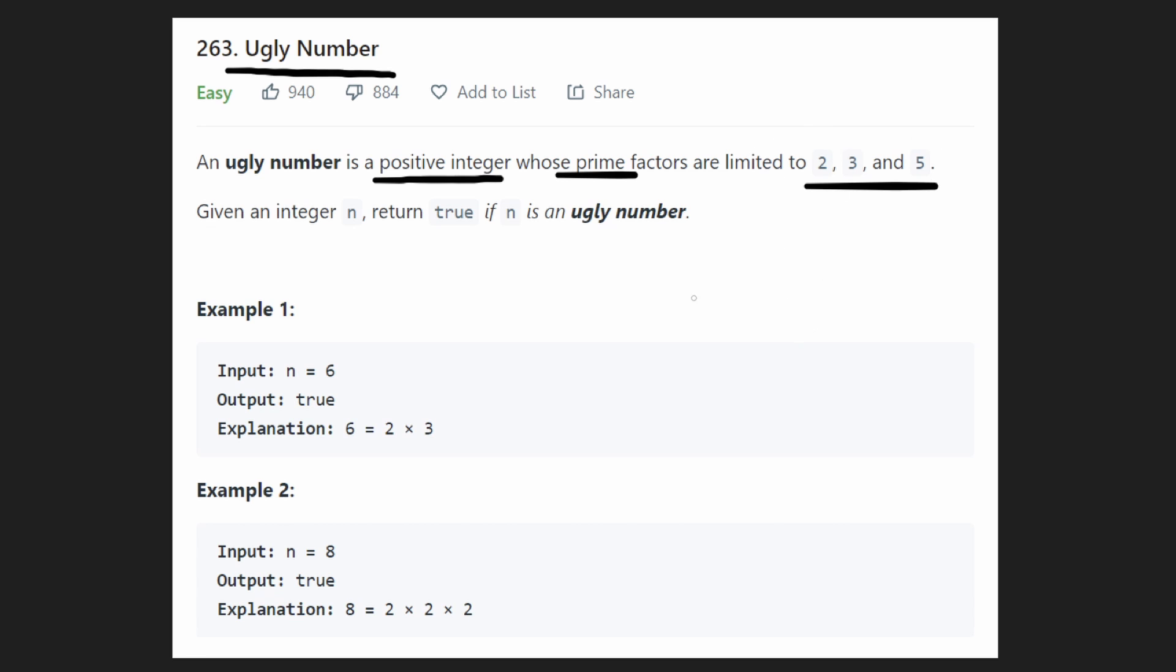Now, what about 1 itself? Is 1 a prime number? By definition, no, 1 is not a prime number. So these are prime numbers. 6 is not a prime number because it has some factors 2 and 3, right? Multiply 2 and 3 together, we get 6. So therefore, 6 is not a prime number.